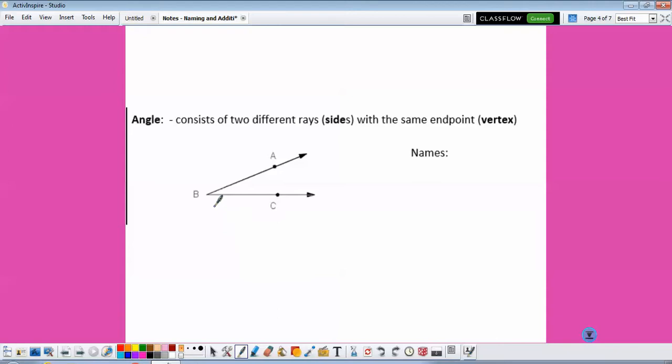An angle consists of two different rays, so here's one ray, here's our other ray, and they connect at the same endpoint, which is referred to as our vertex.